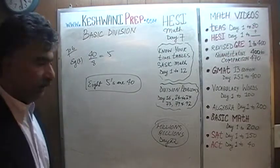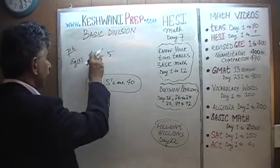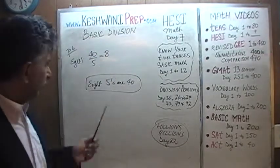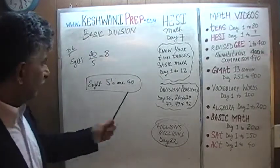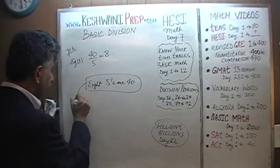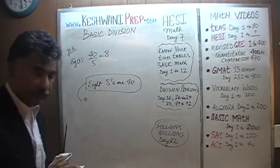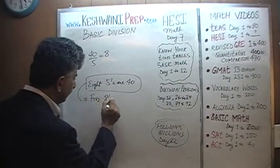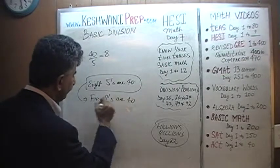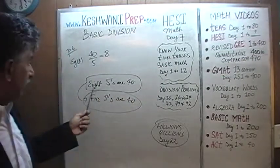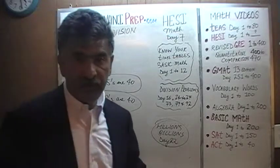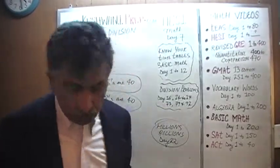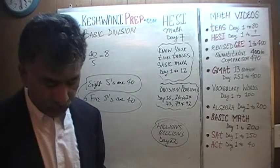Similarly, had they asked us 40 divided by 5, the answer would have been 8. Because if 8 fives are 40, then it stands to reason that 5 eights must also be 40. 5 eights are 40 and 8 fives are 40 because 8 times 5 equals 5 times 8, obviously. I know it's very basic — it's very simple.